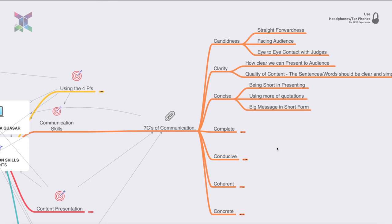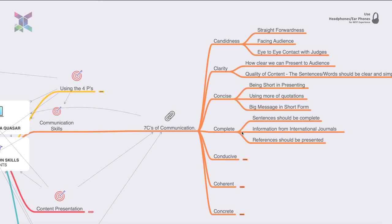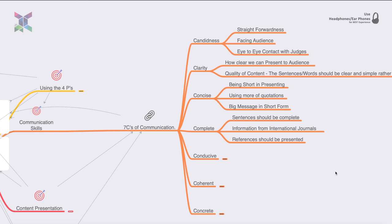Completeness means whatever sentences you present should be complete — with a subject, verb, and object. Information from international journals should be included, as that is an important criterion for evaluation, and references should also be presented.